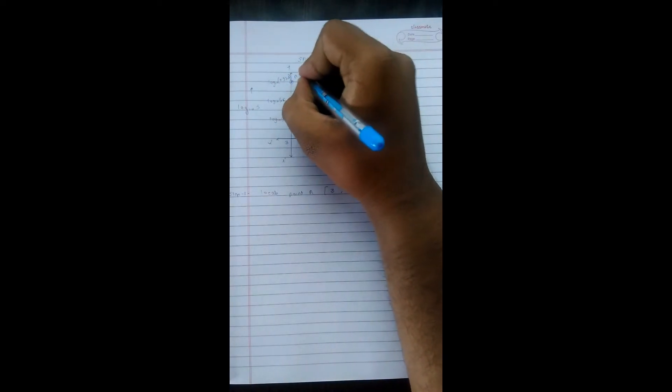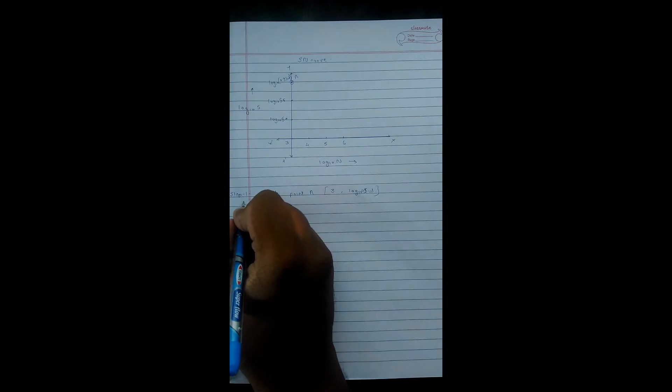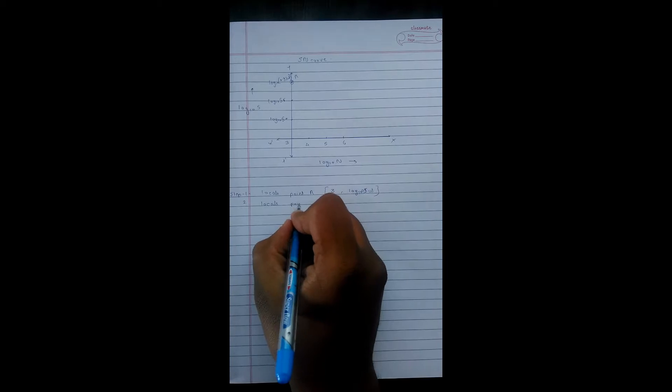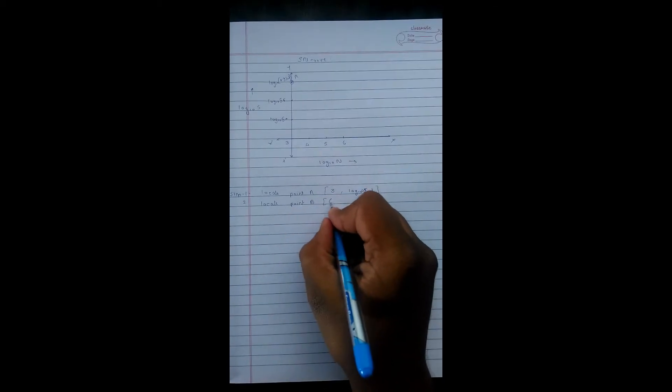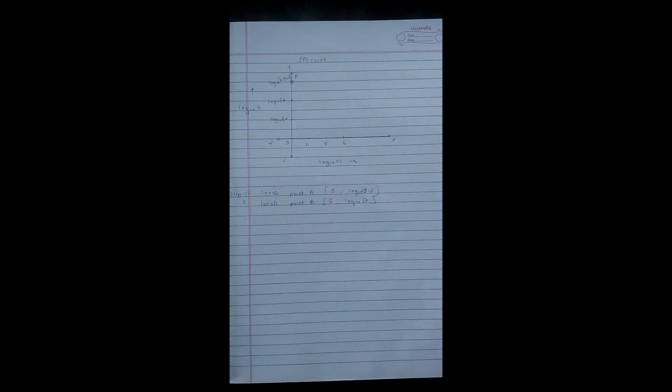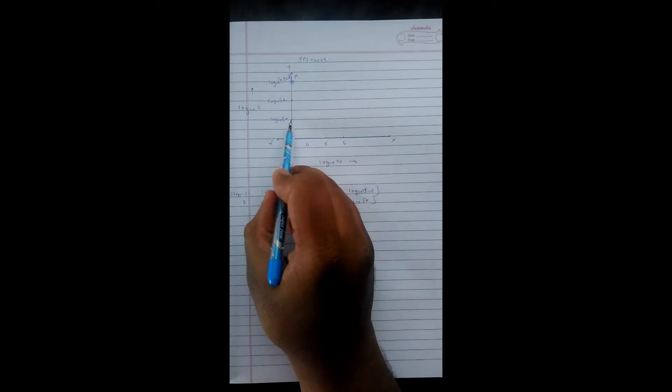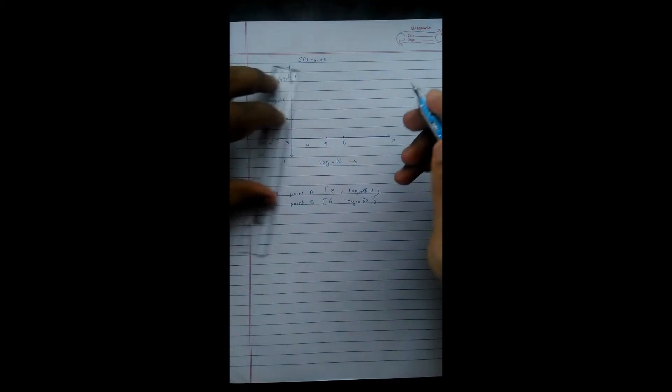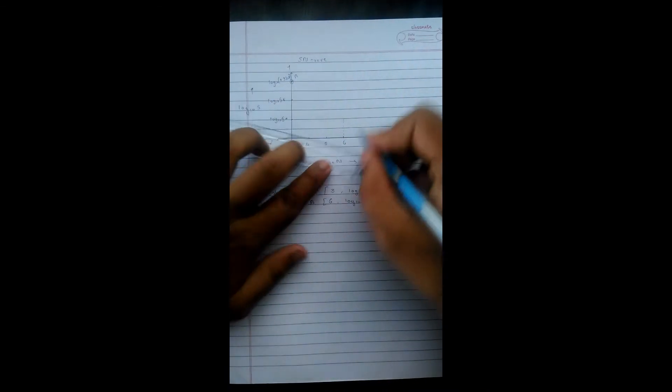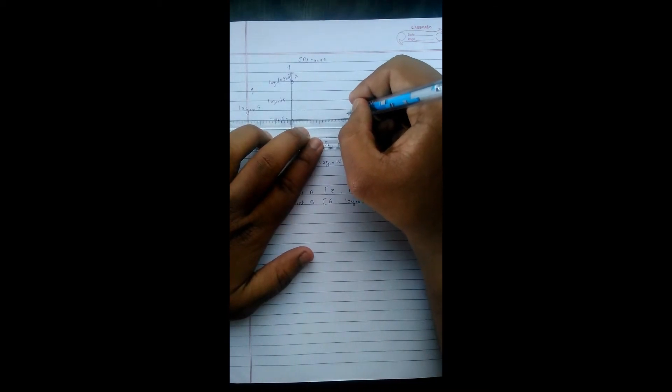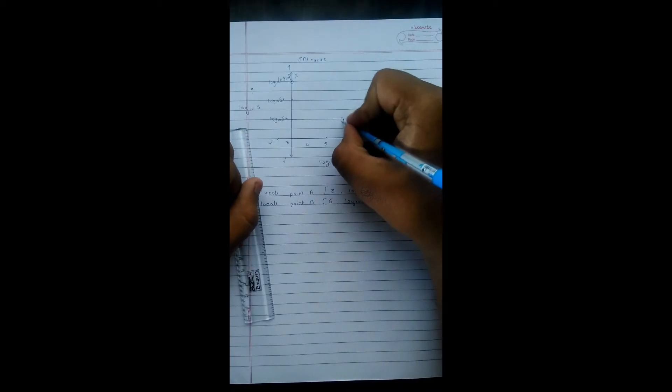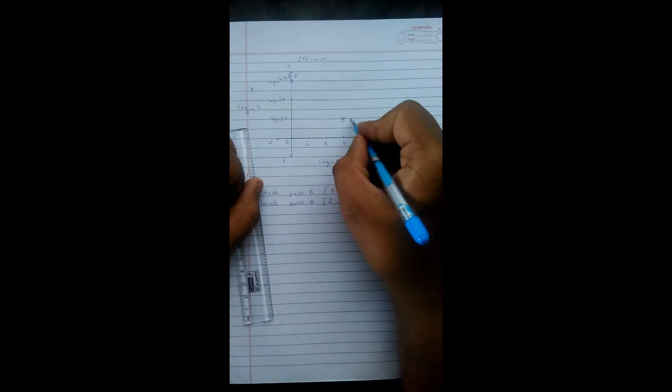Here we got the point A. Now step number two is locate point B on 6, log to the base 10 Se where 6 means this, log to the base 10 Se means this. Now for that we have to get one point. Hence approximately using manual scale I am taking one point here. I got this point, named it as B.